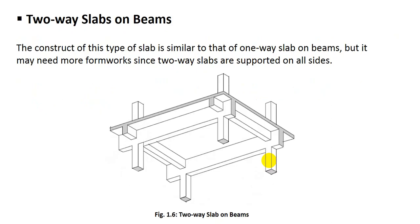Then two-way slab on beam. If the length-to-width ratio of the slab is less than two, then it is known as a two-way slab. The construction of this type of slab is similar to the one-way slab on beam, but it may need more formwork since two-way slabs are supported on all four sides.